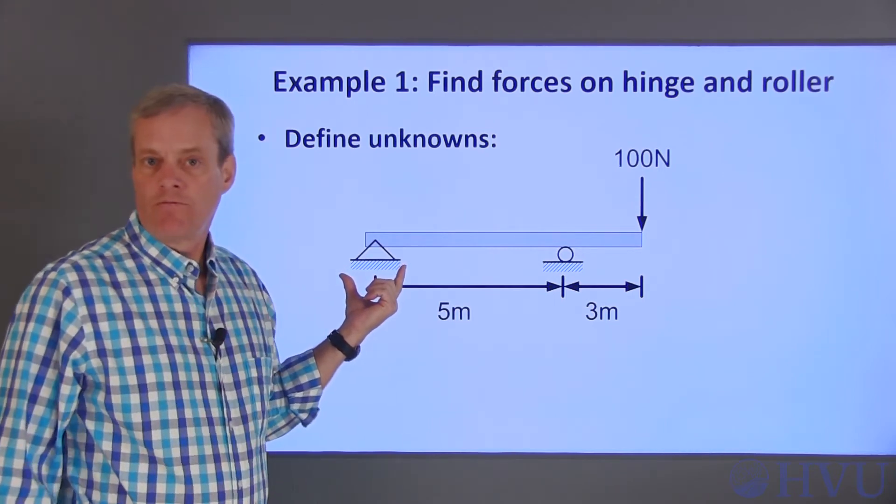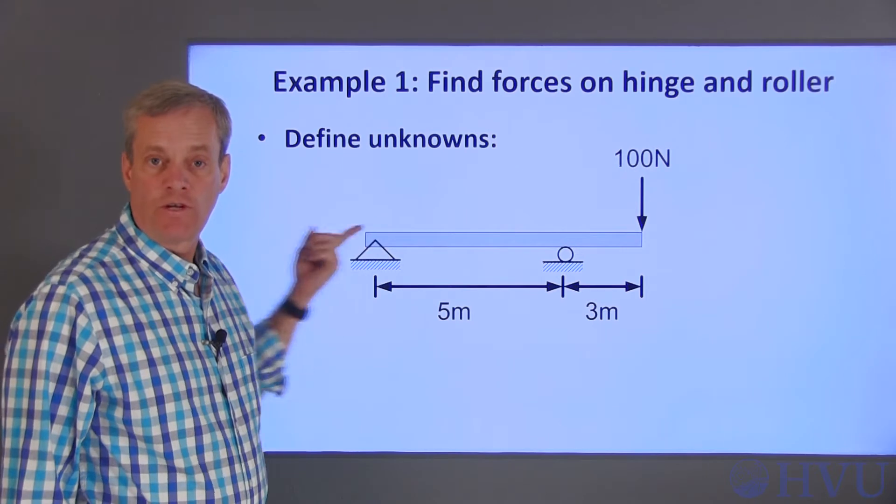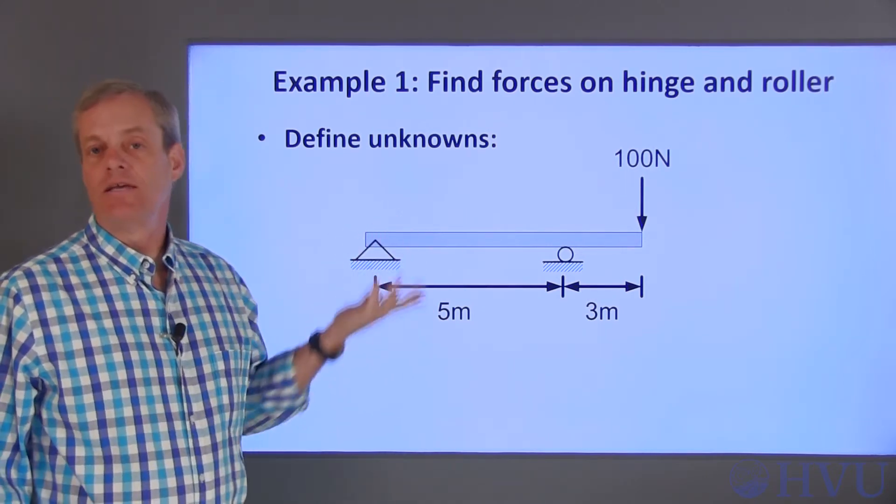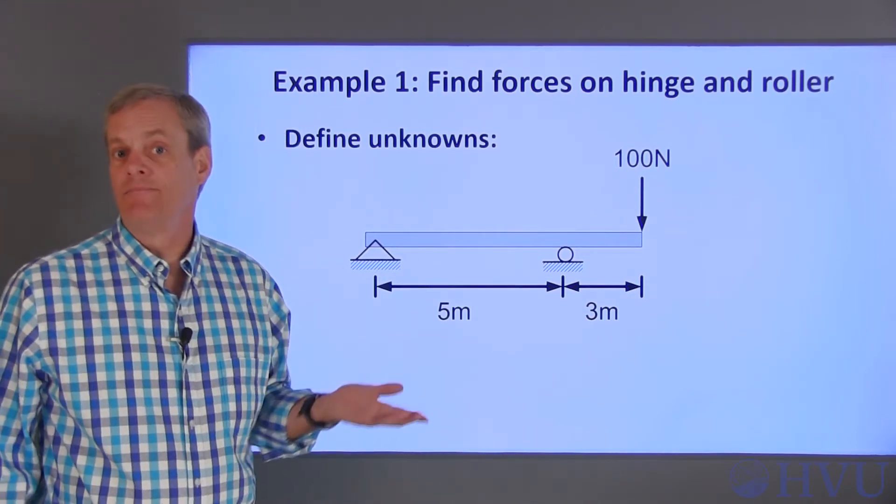This hinge can support forces in two directions. It will keep this end from moving either vertically or horizontally, but it won't keep the end from rotating. It's like a hinge on a door. You can rotate the door, but you can't move the door up, down, or sideways.